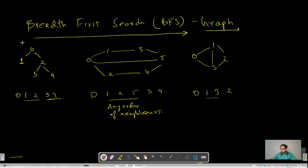So this is a graph given to you: nodes zero, one, two, three, and four. What you need to do is visit the first node zero, then visit its neighbors, and then their subsequent neighbors. For zero, the neighbors are one and two — these can be written as one, two or two, one since the immediate neighbors of a node can be listed in any order. We move through this using a queue.